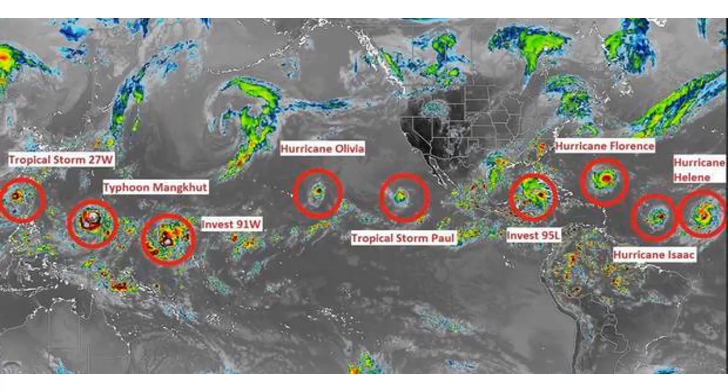Good afternoon, everyone. Nine tropical systems across the equatorial bands in our oceans.